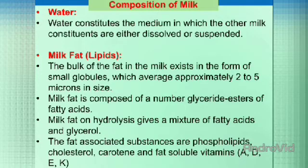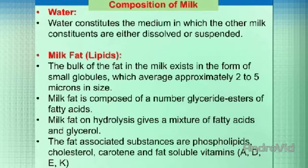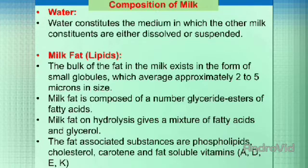The second is milk fat, i.e. lipids. The bulk of fat in milk exists in the form of small globules which average approximately 2 to 5 microns in size. Milk fat is composed of a number of glyceride esters of fatty acids, and on hydrolysis gives a mixture of fatty acids and glycerol. The fat-associated substances are phospholipids, cholesterol, carotin, and fat-soluble vitamins.